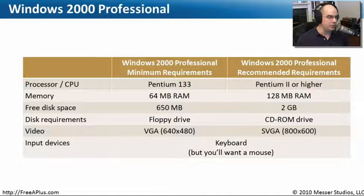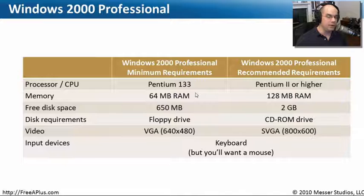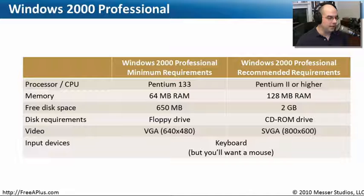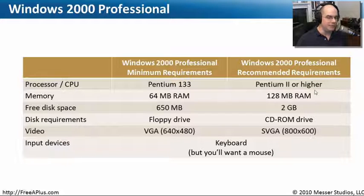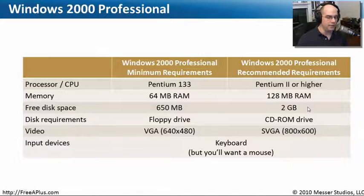The Windows 2000 minimum system requirements are a Pentium 133 — a very old processor — running 64 MB of RAM and 650 MB of space on the hard drive. The recommended requirements are at least a Pentium 2 running 128 MB of RAM and 2 gigabytes of free space on a hard drive.